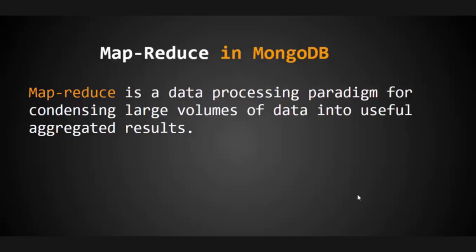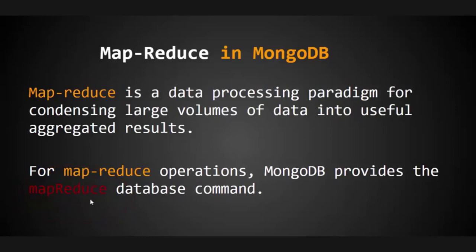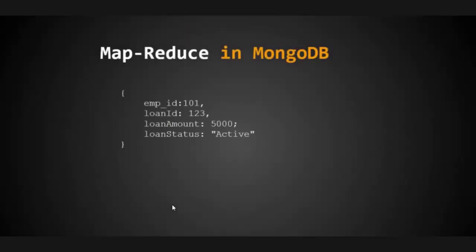For map reduce operations, MongoDB provides the map reduce database command. To use this command, we use db dot collection name dot mapReduce, and inside that we provide the mapper and reducer functions along with other query options.